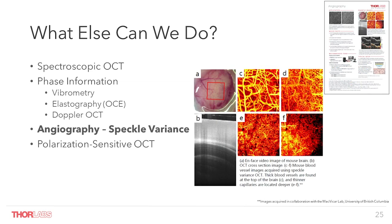Another OCT contrast method is angiography, which in our 4-image OCT software is readily available as a speckle variance mode. We grab two datasets and by analyzing what has changed between the acquisitions we can highlight those changes. One nice example is to analyze the changing signal from red blood cells to distinguish blood vessels from surrounding tissue without any use of dyes. Here we can see one nice example from a mouse brain: on the top left a video camera image with the region of interest, on the bottom left an intensity image, and on the right angiography images from different depth regions — thick blood vessels at the top and thinner capillaries located a little bit deeper.